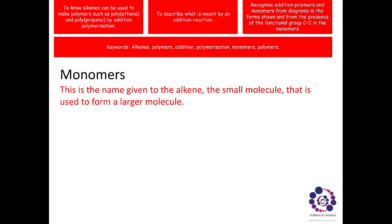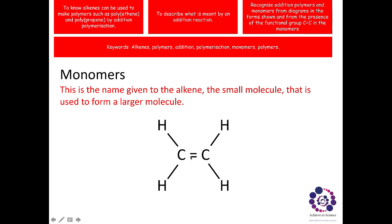To begin with, we need to know what the term monomer means. Mono means one, and therefore this is the name given to a single alkene that is used to make a larger molecule. For instance, here we have an alkene. An alkene is shown by having a double carbon-carbon bond, which is shown at the centre here.